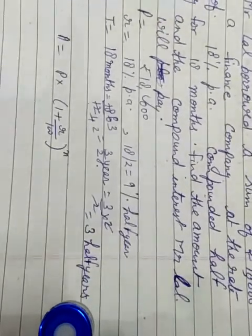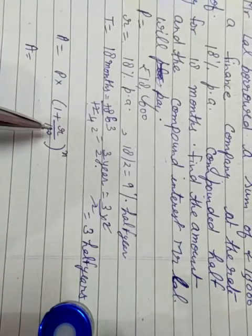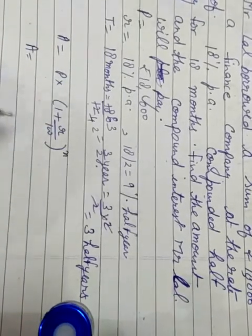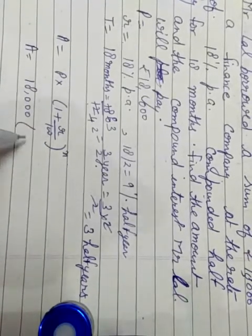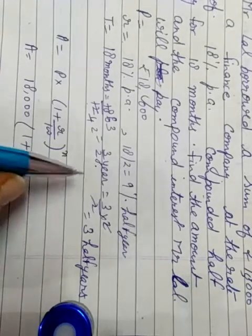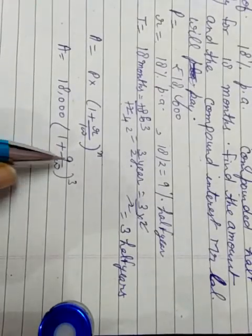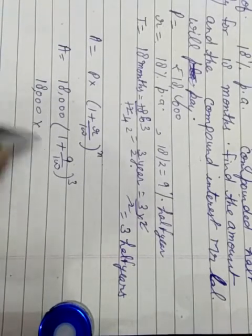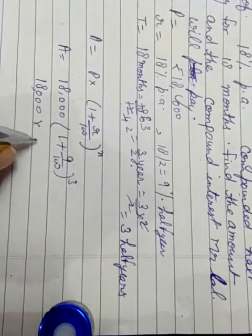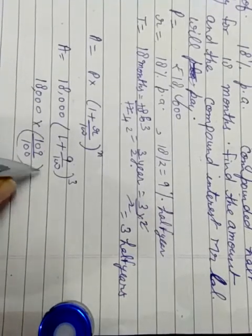Now by putting the value, write the formula: A is equal to P into 1 plus R upon 100 raised to the power N. P is equal to 18,000, R is 9 upon 100, time is equal to 3. It is not divisible, so we write 109 upon 100, whole power 3.